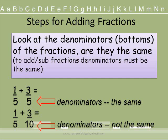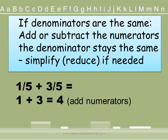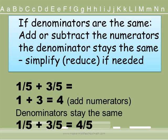Steps for adding fractions: look at the denominators — the bottoms of the fractions — and ask yourself, are they the same? In order to add or subtract fractions, denominators must be the same. If the denominators are the same, all we have to do is add or subtract the numerators. Here's our example: 1 fifth plus 3 fifths. Our denominators are the same, so we're going to add our numerators. 1 plus 3 equals 4. Our fraction is 1 fifth plus 3 fifths equals 4 fifths.